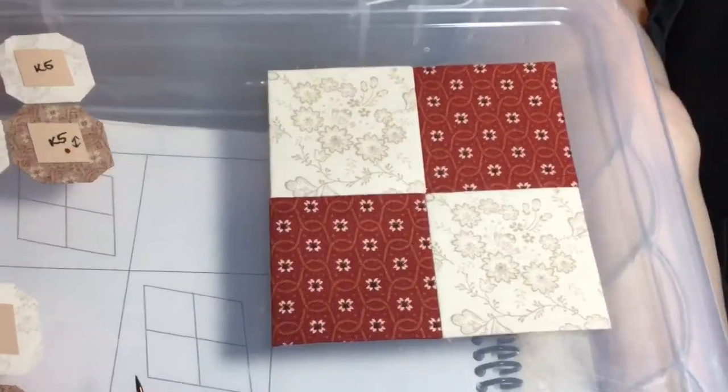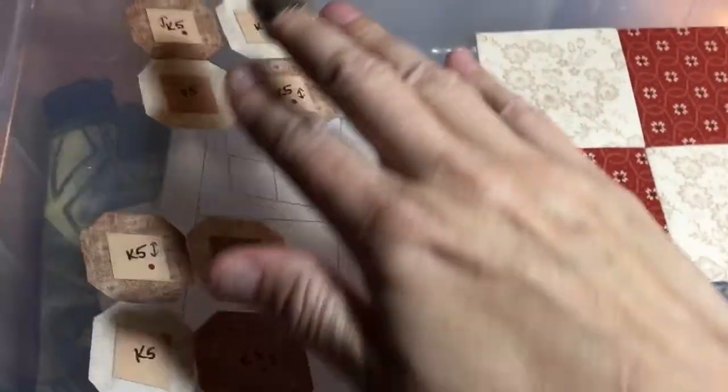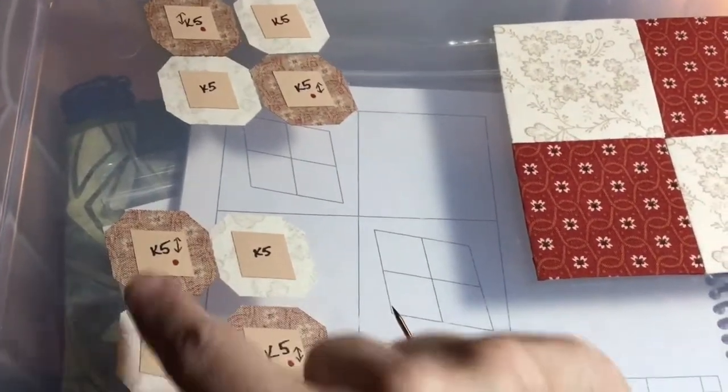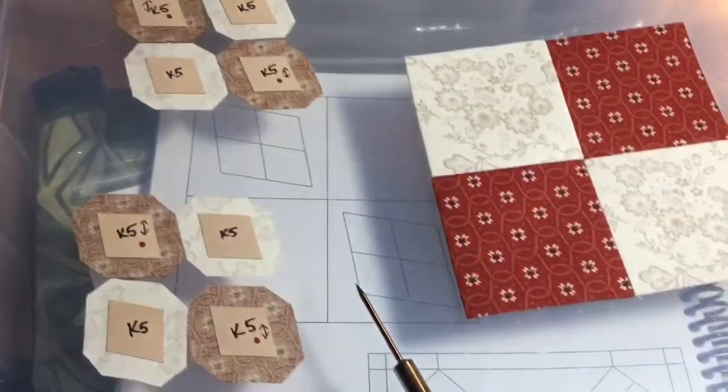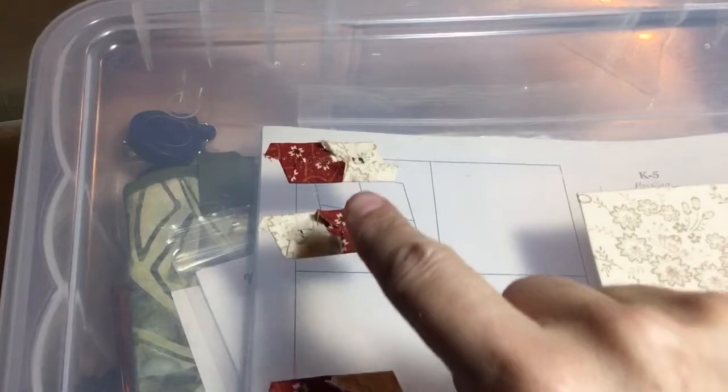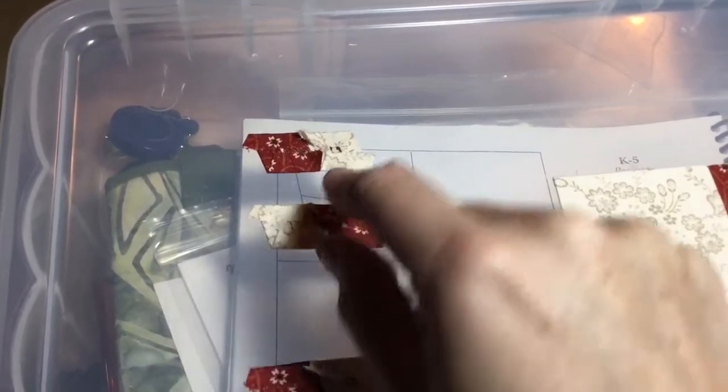I've got my basic block assembled. Now I've got to assemble my two diamonds and they're already laid out here, so I will get these basted and assembled using the same theory behind how I assembled the block.